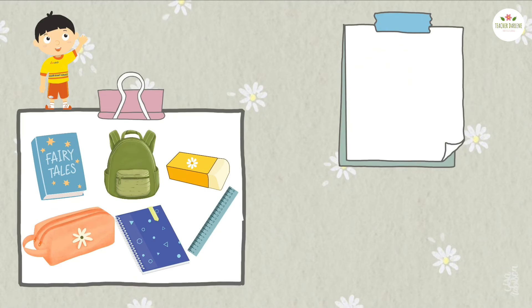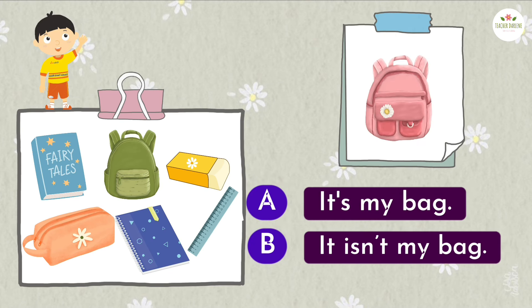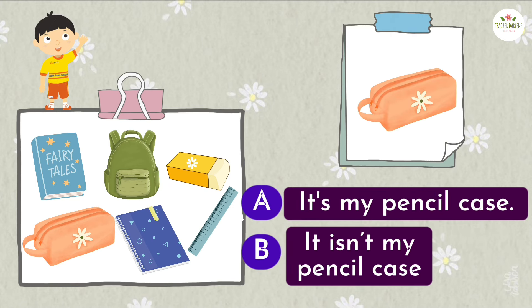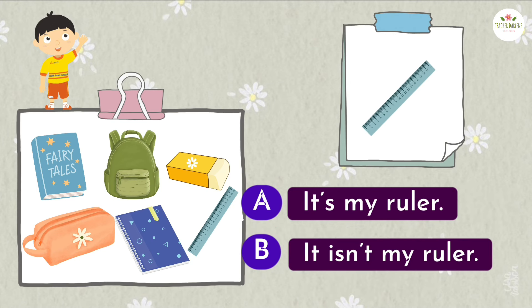Choose the correct answer. It's my book. It isn't my bag. It isn't my rubber. It's my pencil case. It isn't my notebook. It's my ruler.